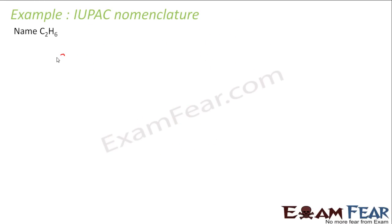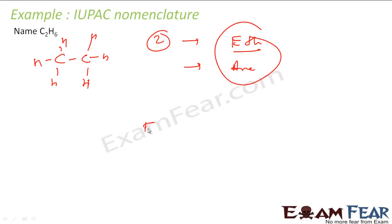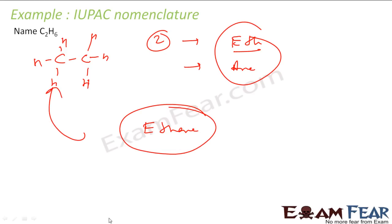Now take C2H6. If you draw C2H6, it has two carbons with three hydrogens each — this is how C2H6 looks. How many carbon atoms? Two. So use 'eth'. All single bonds, so use 'ane'. Add these two together and you get ethane. So this particular structure is ethane.